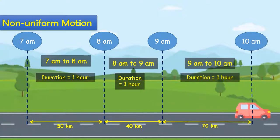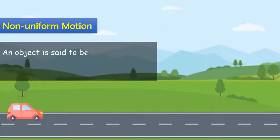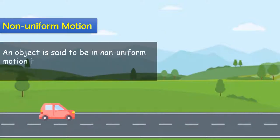So in 1 hour, 1 hour, 1 hour duration, the distances are 50 km, 40 km, and 70 km respectively. The time intervals remain equal but the distances differ.